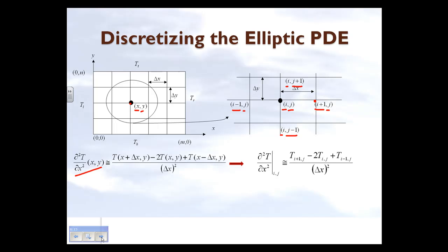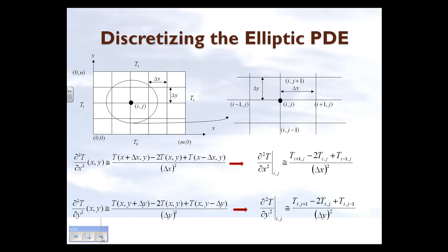So the second derivative of temperature with respect to x at the i comma j-th node is rewritten using node notation: instead of saying the temperature at x plus delta x comma y, we say it is the temperature at node i plus 1 comma j. Nothing has changed — we are just numbering the nodes. Similarly, the second partial derivative with respect to y is converted from coordinate locations into node numbers, giving us the rewritten formula in terms of node indices.